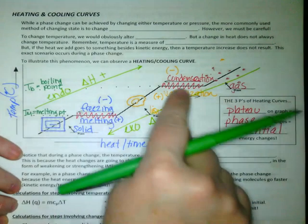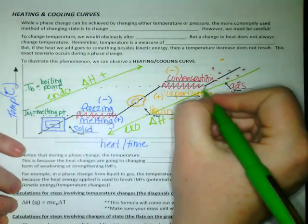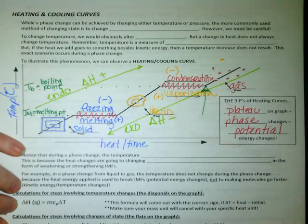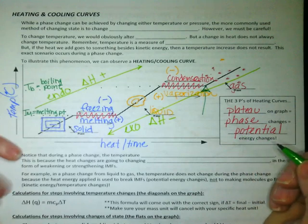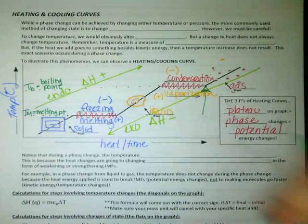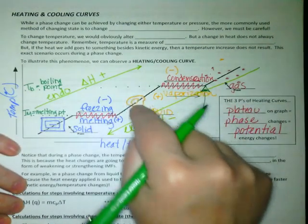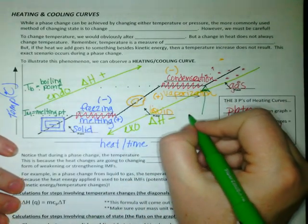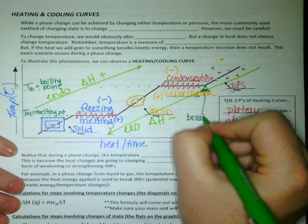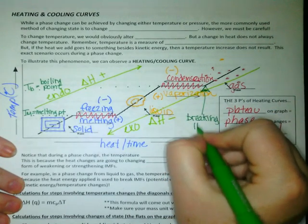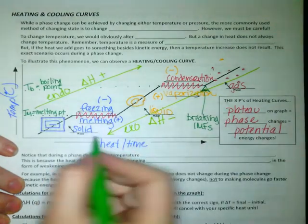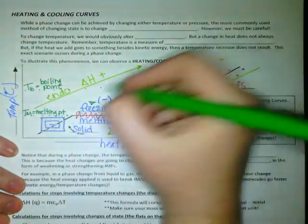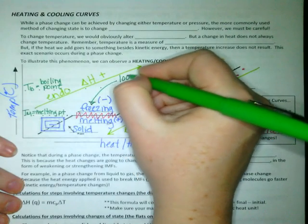Up here when I'm vaporizing, in this section we are actually breaking those IMFs. We're snapping those connections between these particles so that the gas particles can be free to move independently. So here we are breaking IMFs, whereas here I'm just loosening them.